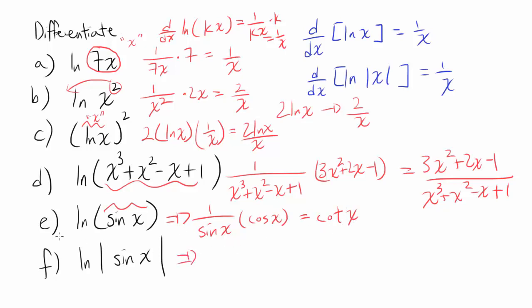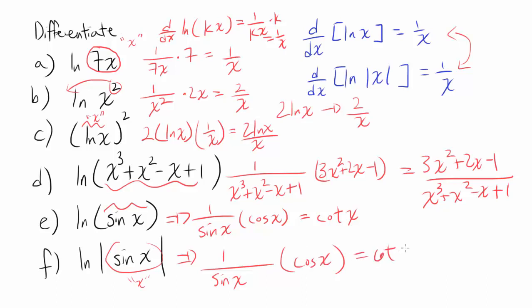Now let's look at part f. This is the same as part e, but with absolute value signs around sin(x). As we've seen, it doesn't matter if you have the absolute value or not — the final result is the same. Differentiating natural log of absolute value of sin(x) gives 1 over sin(x), and multiplying by the derivative of sin(x), which is cosine(x), gives cotangent of x. The derivative of ln(x) and the derivative of ln|x| give the same result, so replacing the parentheses with absolute value signs doesn't change the answer.